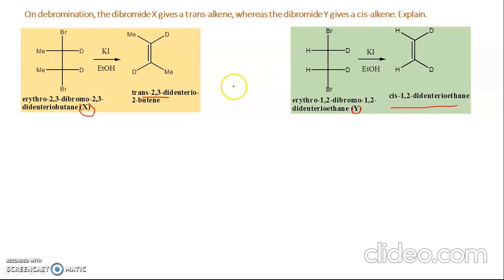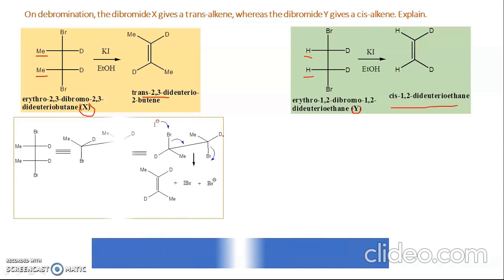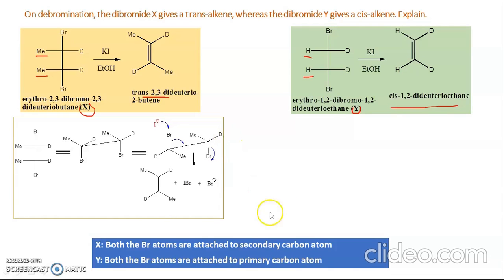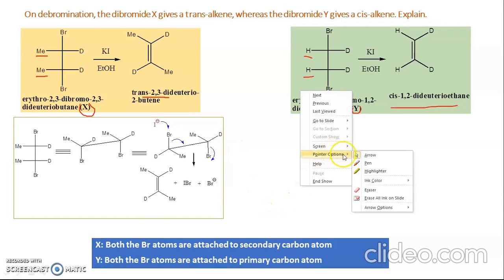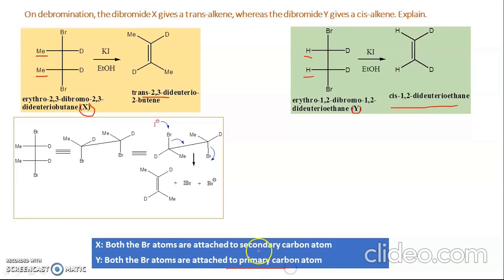Both are dibromides, but what is the difference? In the first molecule there are two methyl groups, but in the second molecule there are two hydrogens — that is the only difference; the rest of the portion is the same. In X, both bromine atoms are attached to secondary carbon atoms, but in Y both bromine atoms are attached to primary carbon atoms.